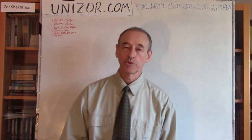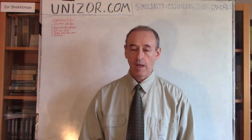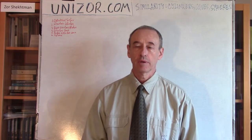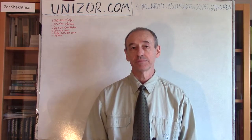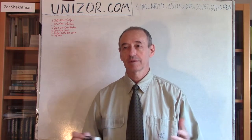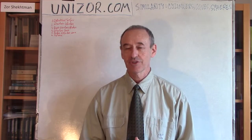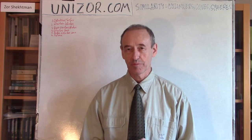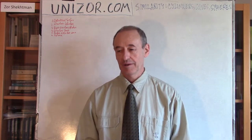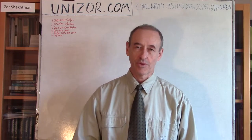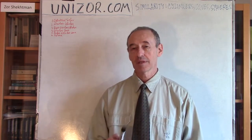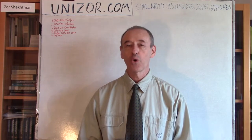Hi, I'm Zor. Welcome to a new Zor education. I would like to have a couple of words about similarity of objects which are not the ones which contain just straight lines and planes. So, it's not like cubes or pyramids, for instance — a little bit more complex. What I mean is cylinders and cones and spheres.